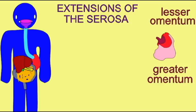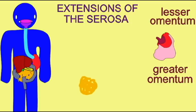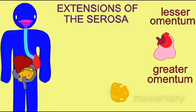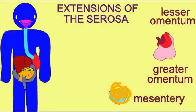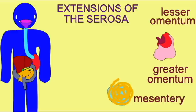The mesentery travels from the small intestines to bind it to the abdominal wall on the posterior side, and thus connects the loops of the small intestine. When the small intestine is spread apart, one can see the mesentery which binds it.